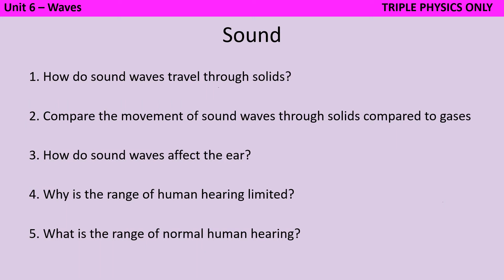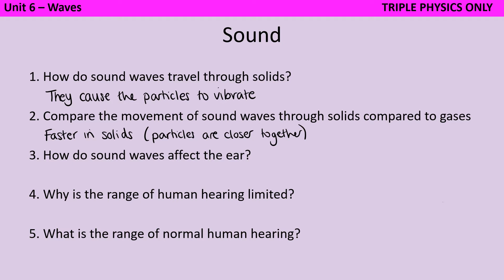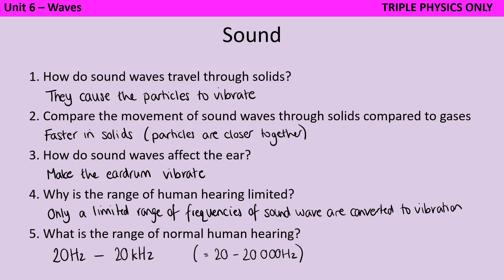Sound waves travel through solids by causing the particles to vibrate. Because the particles are closer together in a solid than in a liquid or a gas, sounds are able to travel faster through solids. When a sound wave reaches your ear, it causes the eardrum to vibrate. Only a limited range of frequencies of sound wave are able to be converted into vibration, and so that's why there's a limit to the different frequencies that you're able to hear. The normal range of human hearing is something like 20 hertz to 20,000 hertz, or you might hear it called 20 kilohertz. As you get older, it's normal for those higher frequencies to be lost.